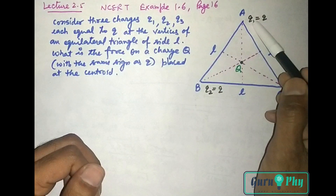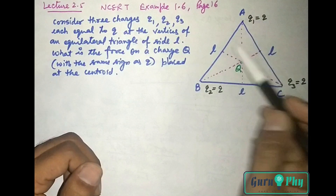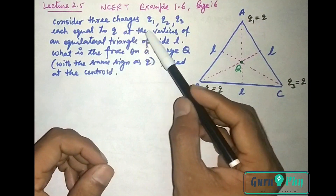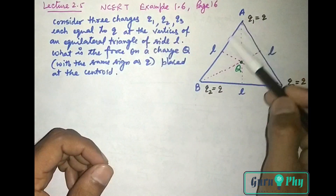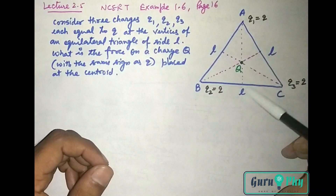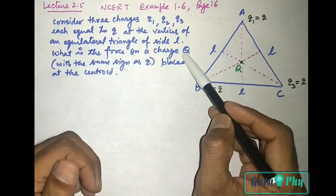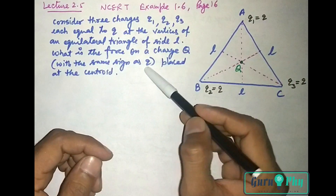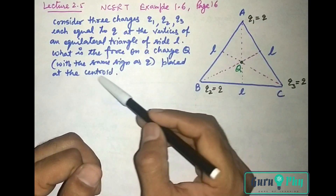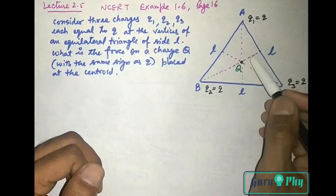Three charges Q1, Q2, Q3 are identical — three charges, each equal to q, placed at the vertices of an equilateral triangle of side L. What is the force on a charge Q (with the same sign as q)? Q पे हमें force calculate करना है। Placed at the centroid — center पे रखा है इस equilateral triangle के।